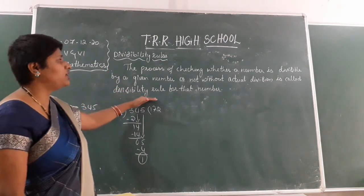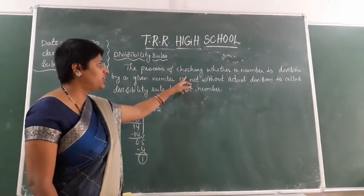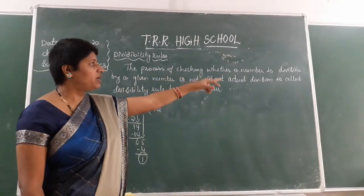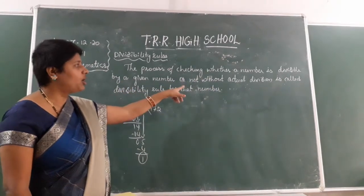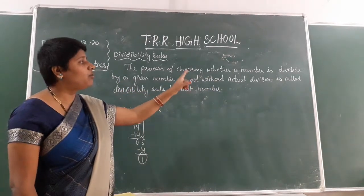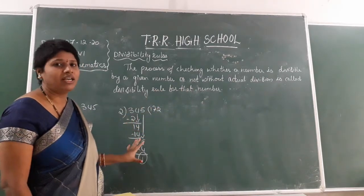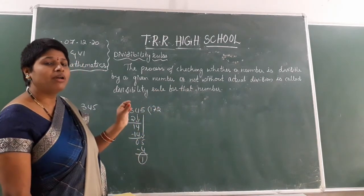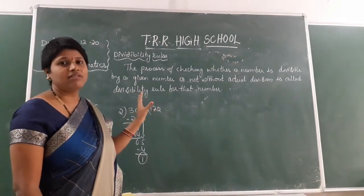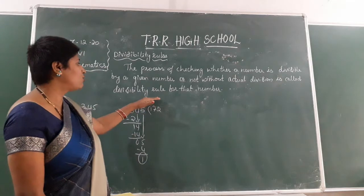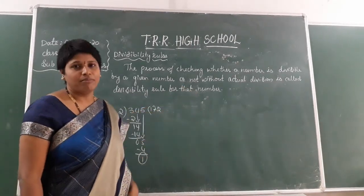The definition of the divisibility rule: the process of checking whether a number is divisible by a given number or not, without actual division. By seeing the number and applying the divisibility rule, we can say whether a number is divisible or not. This is called the divisibility rule.